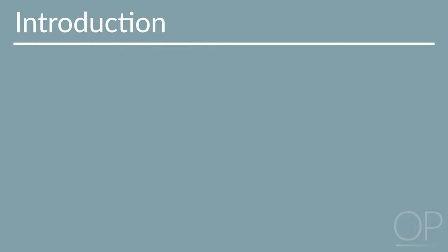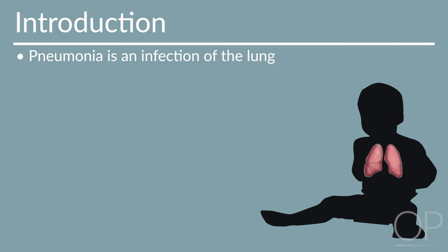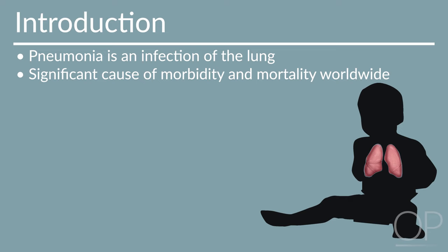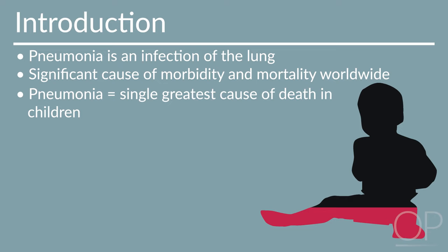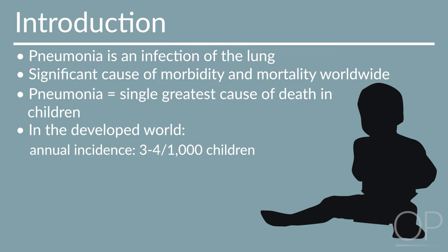Introduction. Pneumonia is an infection of the lung that is common in pediatrics and can have variable etiologies. While most children recover uneventfully, it is a significant cause of morbidity and mortality worldwide. Pneumonia is the single greatest cause of death in children, causing over 2 million deaths annually in children younger than 2 years of age, representing 20% of all deaths in this age group. In the developed world, annual incidence is 3 to 4 per 1,000 children, with an annual mortality rate of less than 1 per 1,000. There is increased incidence in colder months.